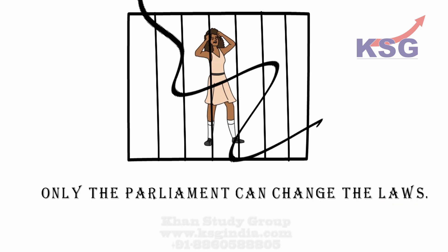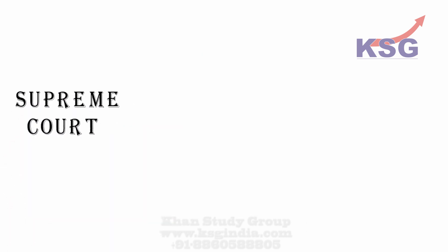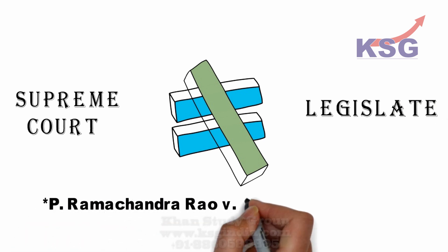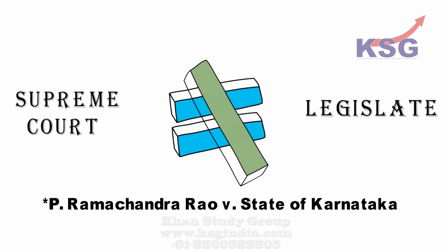The Supreme Court has no power to legislate. It has been authoritatively held by a seven-judge bench of the Supreme Court in the case of P Ramachandra Rao versus State of Karnataka.